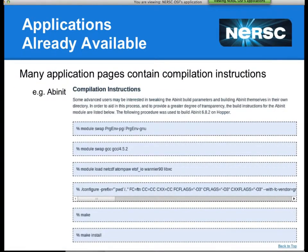If this doesn't satisfy your needs — and there are many users who, even if we have built an application like Abinit, may have made their own customizations or have other reasons to build it themselves — one place to start is by going to the Abinit web page at NERSC and looking at the compilation instructions, which is basically a list of how we built the package available in the modules. This is often a good starting point, and it's available for quite a few applications on the NERSC webpages.